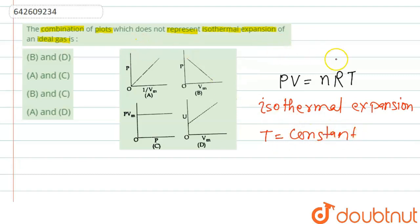So if we see in the equation, n is constant, R is constant, and T is also constant. So the whole term is now constant. So we can write PV equal to K, where K is constant. I have written K for the whole term.